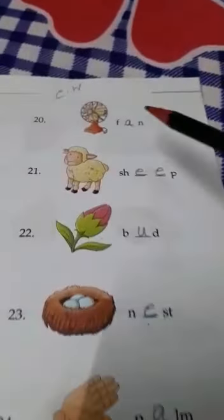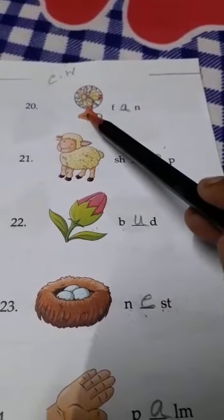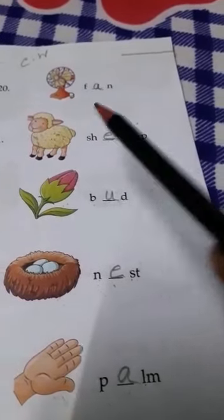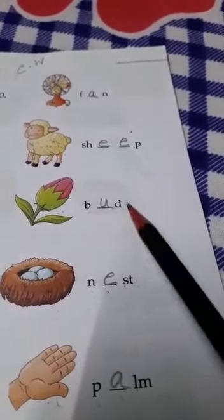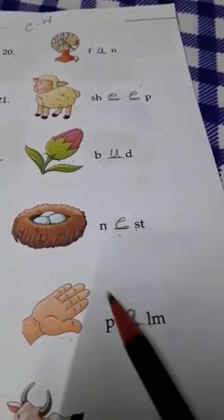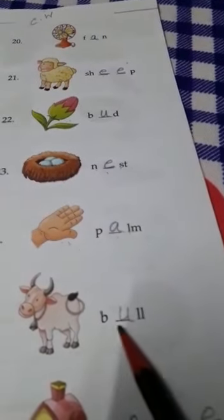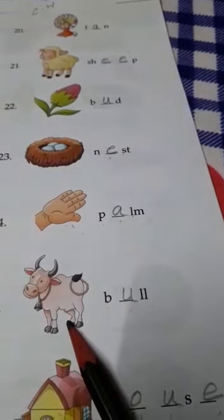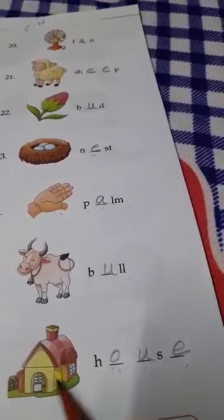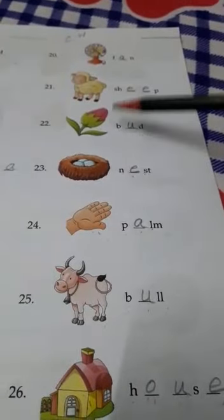Now, read after me. Say, F-A-N. S-H-E-E-P. Sheep. B-U-D, bud. N-E-S-T, nest. P-A-L-M, palm. B-U-L-L, bull. H-O-U-S-E, house. So, for your homework, you learn these spellings.